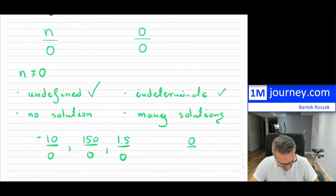But if you see 0 divided by 0, then we call that indeterminate.